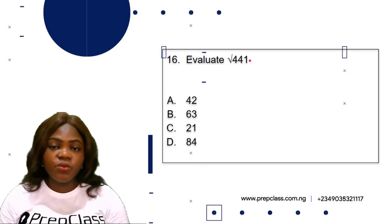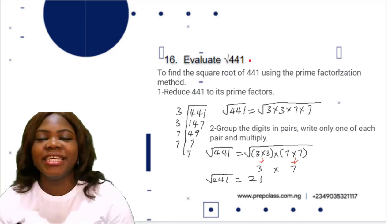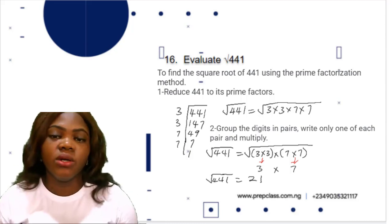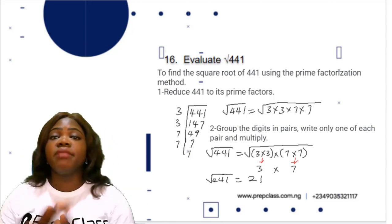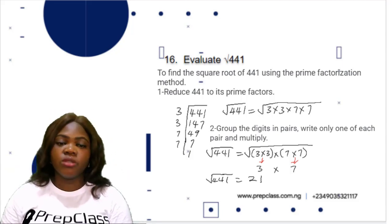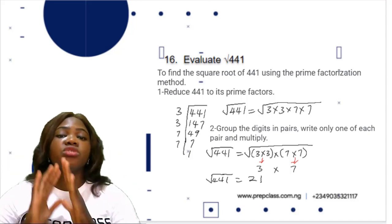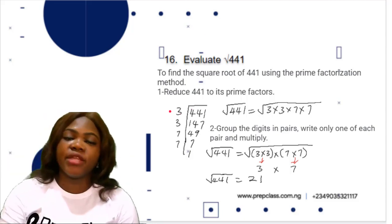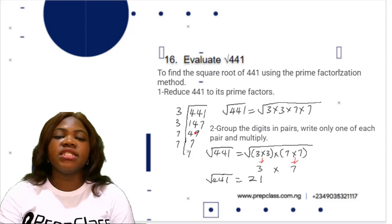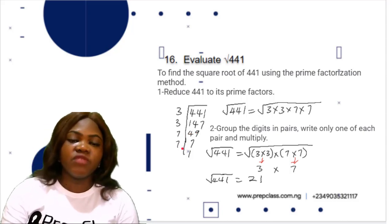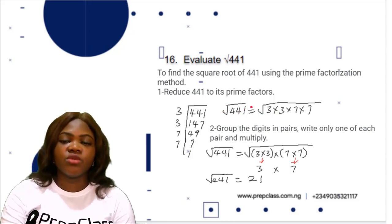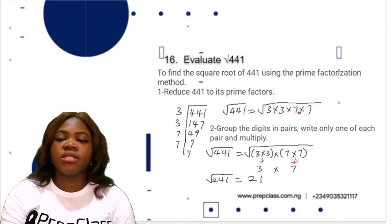To find the square root of 441, we use the prime factorization method. The first step is to reduce 441 to its prime factors. 441 divided by 3 is 147; 147 divided by 3 is 49; 49 divided by 7 is 7; 7 divided by 7 is 1. So the square root of 441 equals the square root of 3 × 3 × 7 × 7.